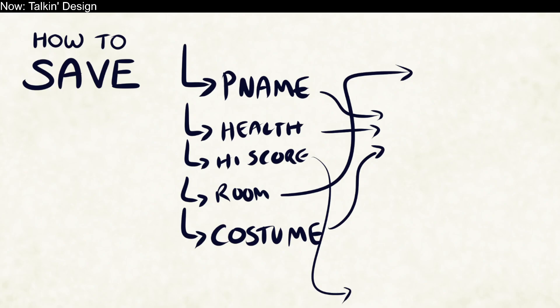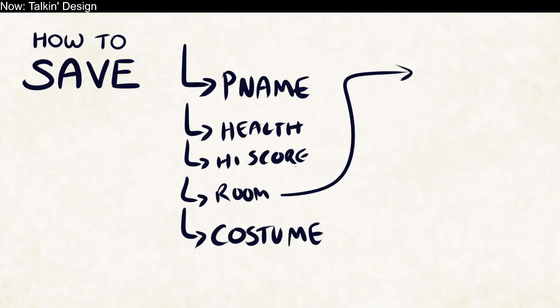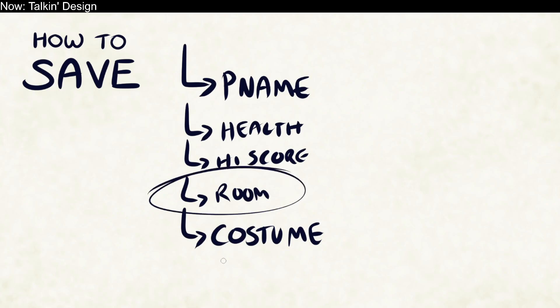Understanding this basic flow is important to any kind of saving and loading — what do you need to save and load universally? It can get very complicated if your game is complicated. The good news is our adventure game is not complicated. The only value we actually need is the room, so that when someone hits continue on the main menu, we know which level to load.